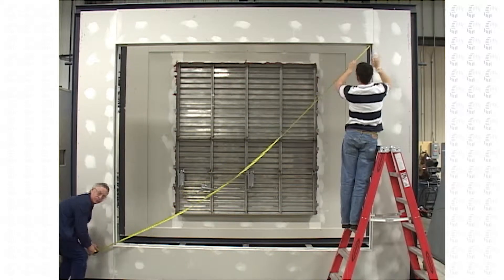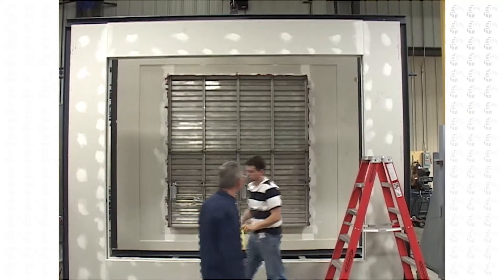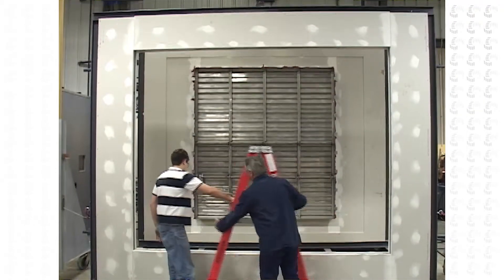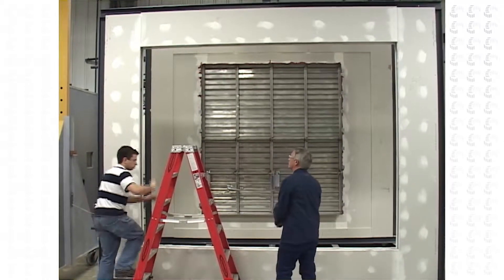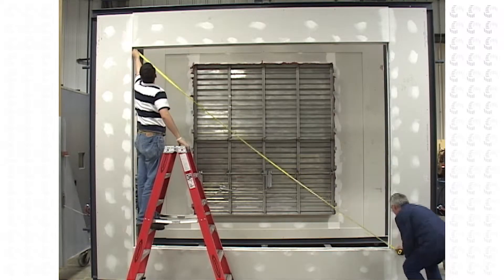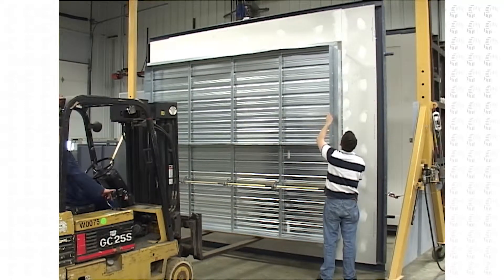Prior to the installation of a life safety damper in a wall or duct opening, it is essential for the opening to be square. Measure diagonally from the upper corner to the opposite lower corner of each opening. Then, measure from the opposite upper corner to the other opposite lower corner. Both measurements should be the same. If not, the opening must be squared before installation.